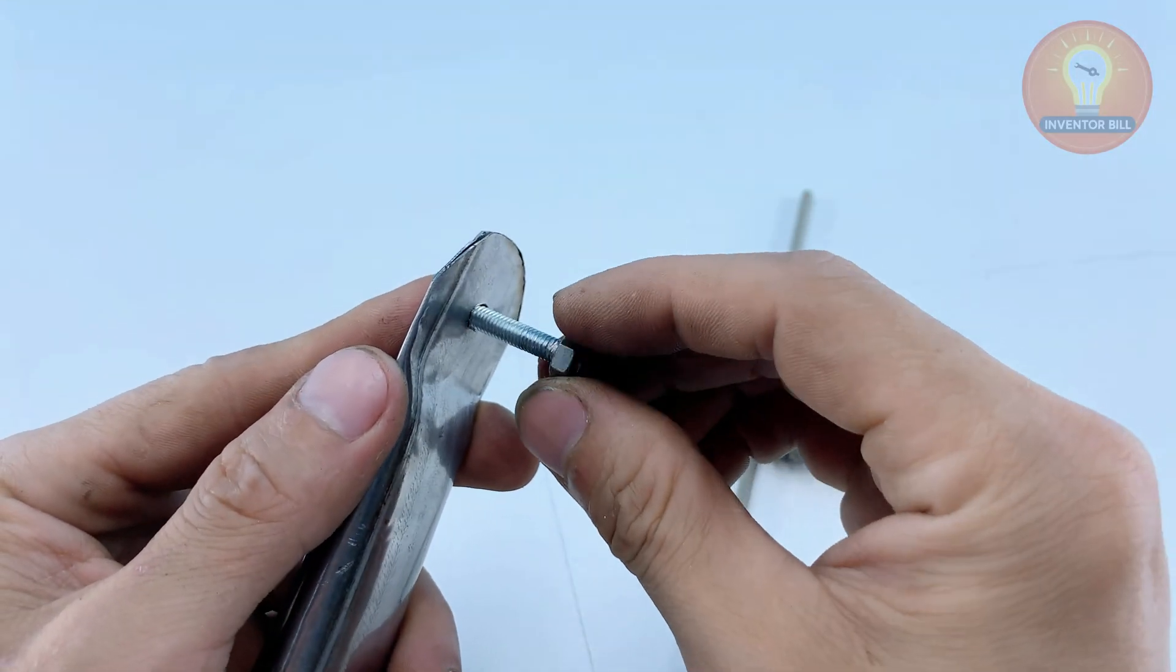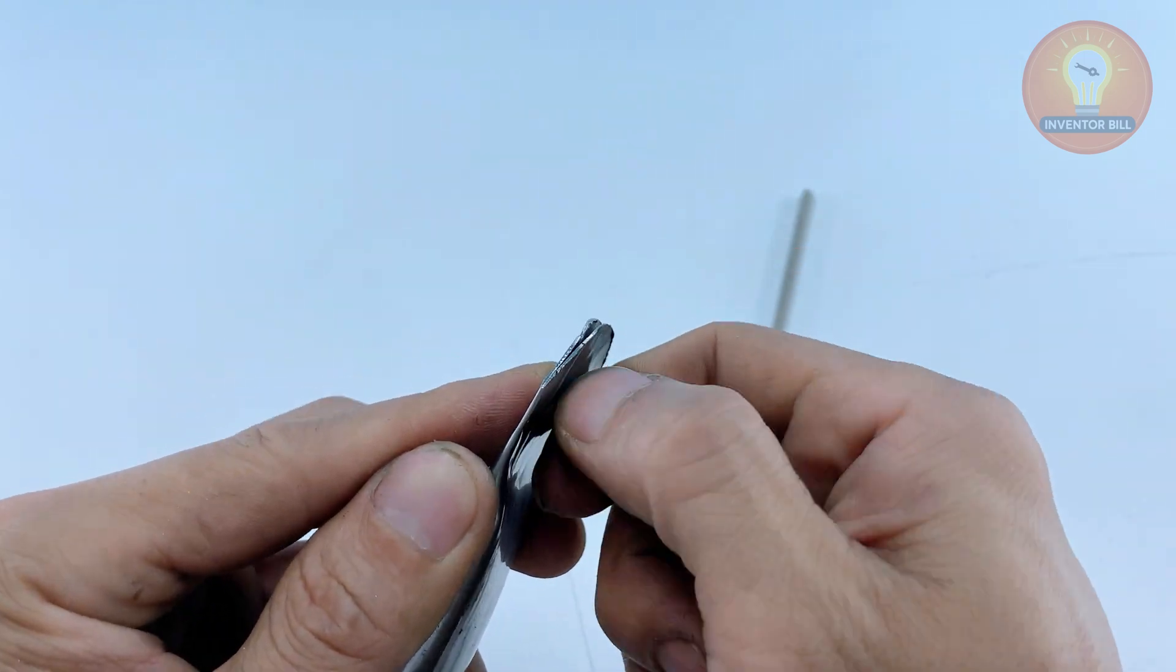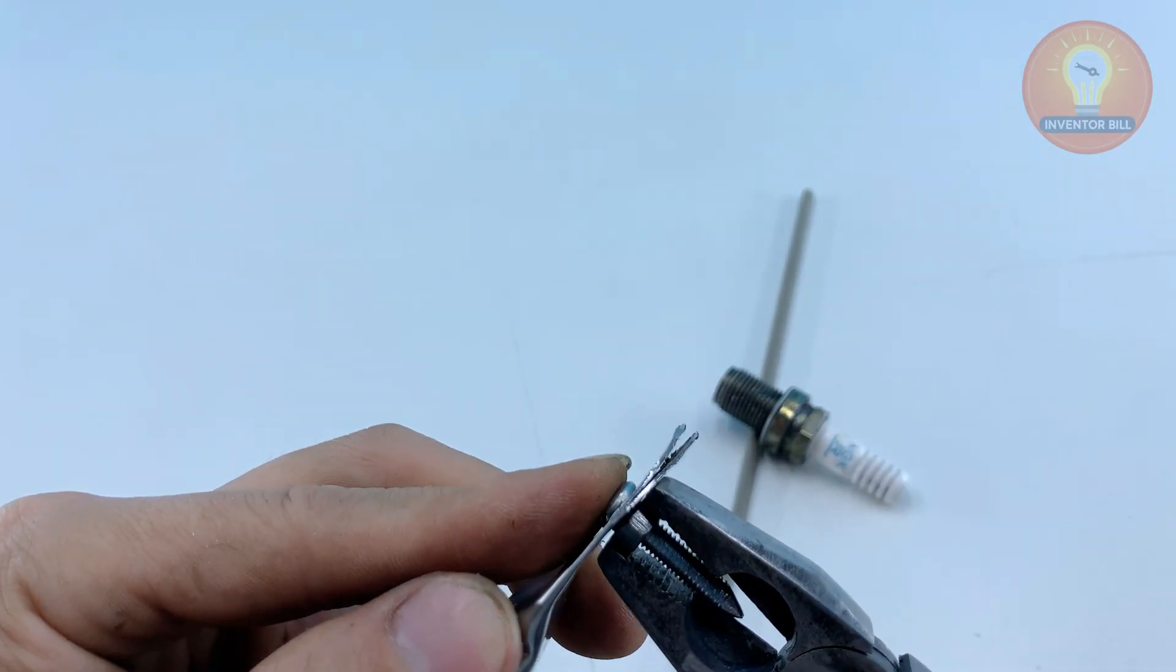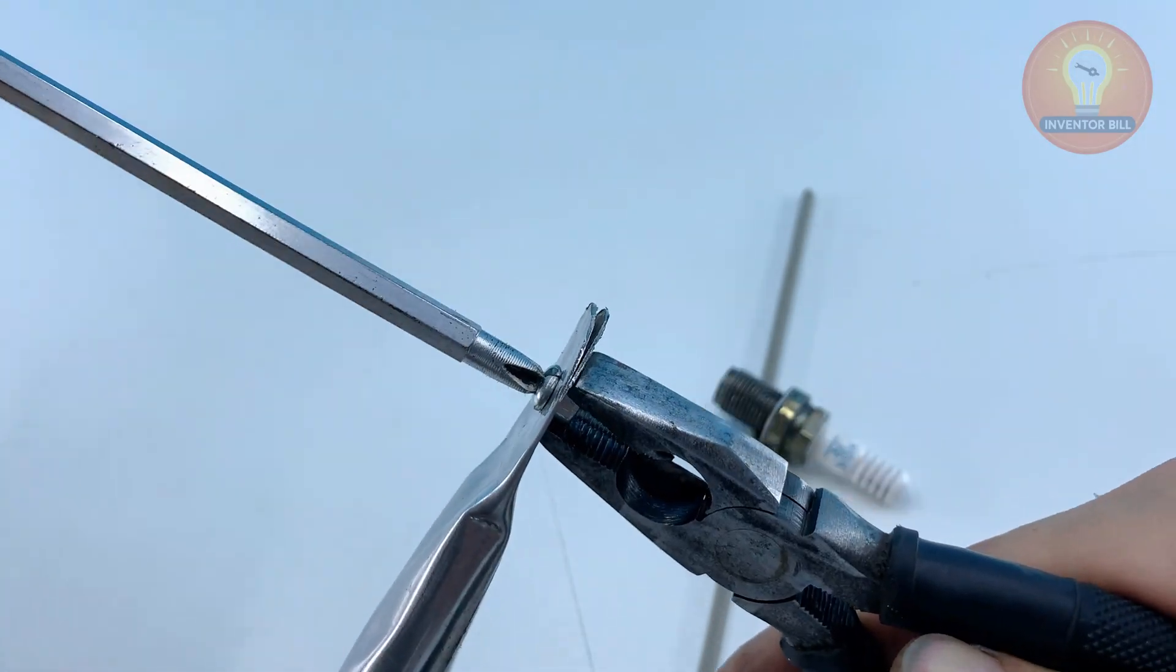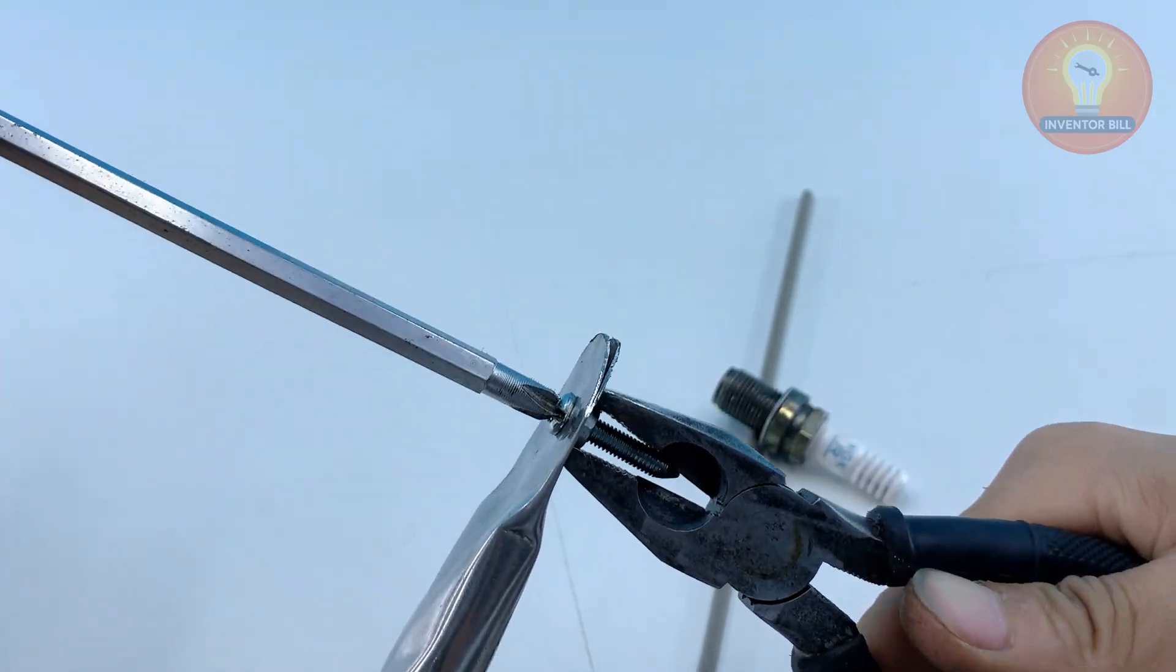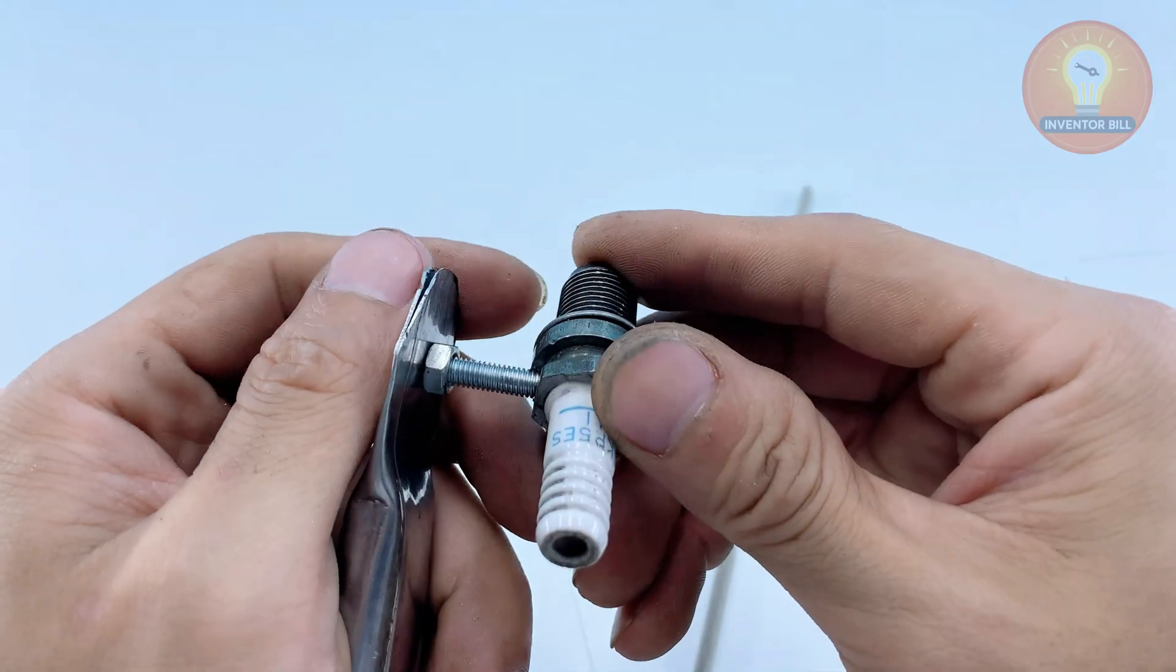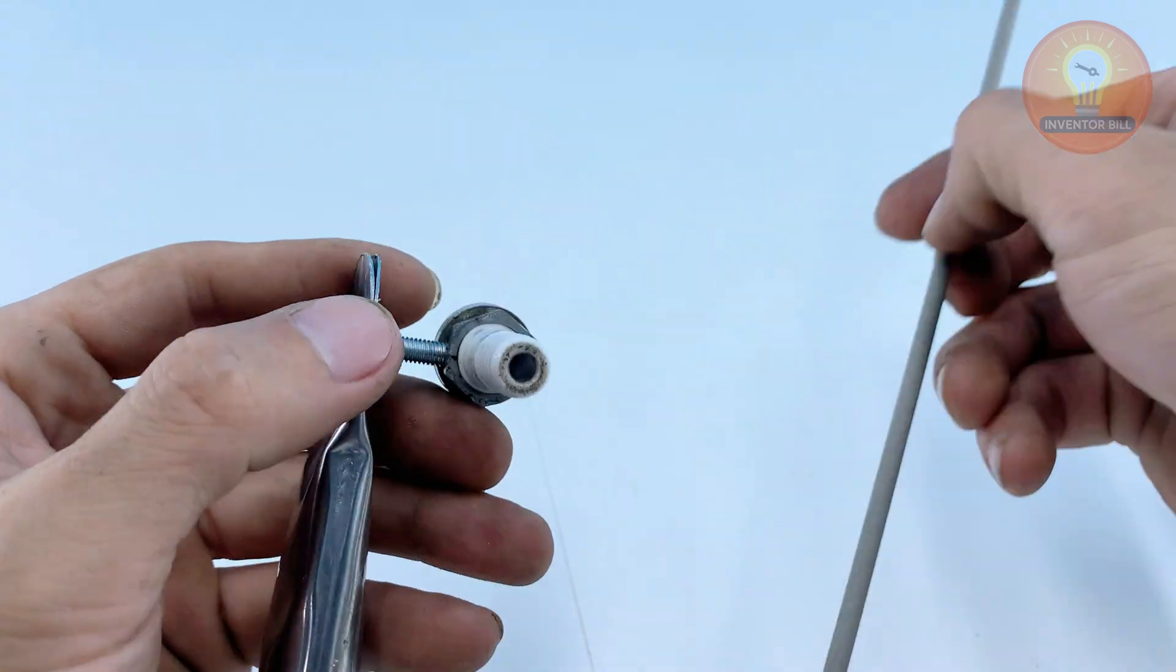Now it's time to bring the pieces together and make the actual welding handle. Take the spark plug body you prepared earlier and the aluminum tube with the white wire attached. Line up the small hole on the tube with the hole you drilled in the spark plug shell. Place a small screw through both holes, then secure it tightly with a nut on the other side. This gives you a strong electrical and mechanical connection between the wire and the plug. Make sure everything feels firm but not overly tight.